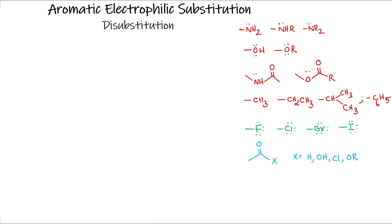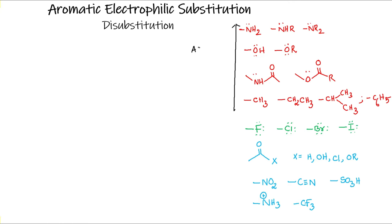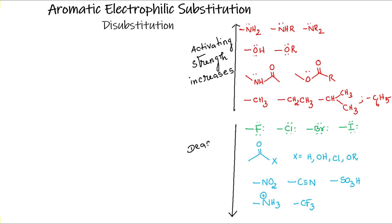Carbonyl compounds like aldehydes, ketones, acids, acid chlorides, etc. are deactivating groups. Other deactivating groups include NO2, CN, SO3H, NH3+, CF3, etc. The activating strength among the activating groups increases from bottom to top as shown, and the deactivating strength increases from top to bottom among the deactivating groups.